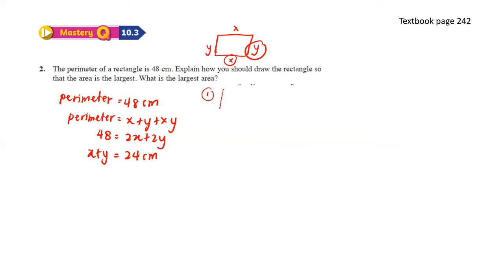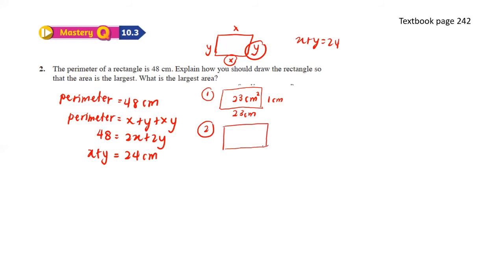For the first sample, the base is 23 cm and the height is 1 cm. The sum of 23 and 1 gives 24, satisfying x plus y equals 24. The area is 23 times 1, which gives 23 cm squared. For the second sample, let's try 20 cm and 4 cm. The area is 20 times 4, which gives 80 cm squared. This area is larger than the first one, but it might not be the largest.